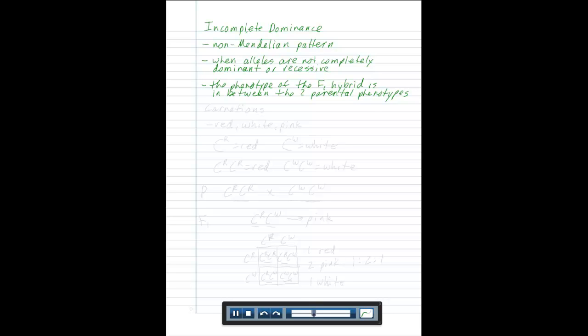Let's look at an example. In flowers known as carnations, incomplete dominance is evident in their color. Carnations can be red, they can be white, they can also be pink. Now there are other colors that carnations can be, but these three colors exhibit the incomplete dominance inheritance pattern.